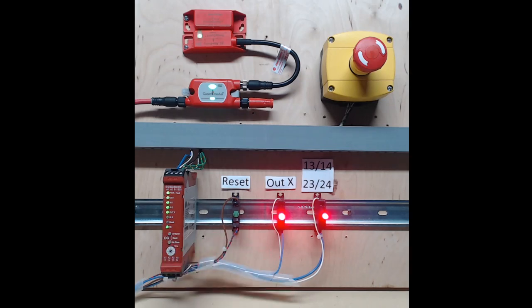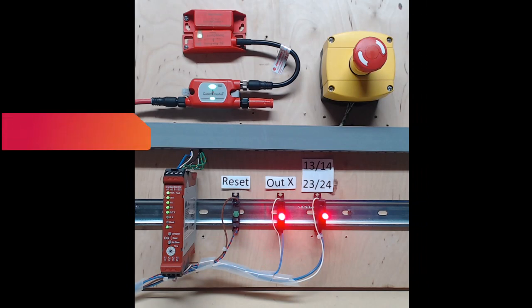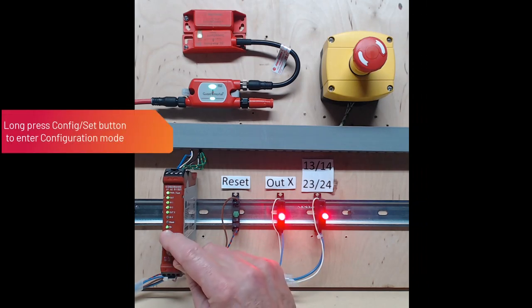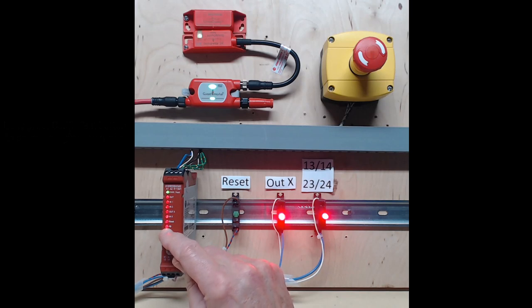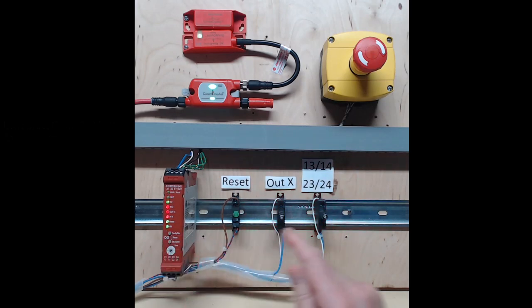To put the DG relay into configuration mode, I long press the config set button. After a short duration, the power LED will remain solid green, and all the other LEDs will flash red. Release the config button, and the DG goes into configuration mode. And notice also that the outputs turn off. While in configuration mode, the power indicator flashes green.